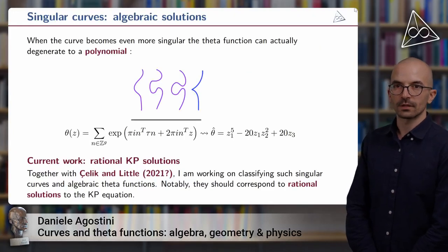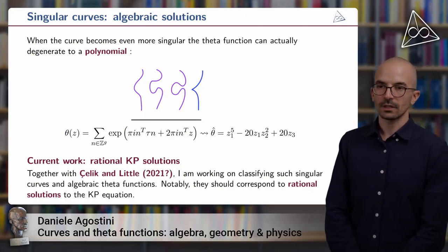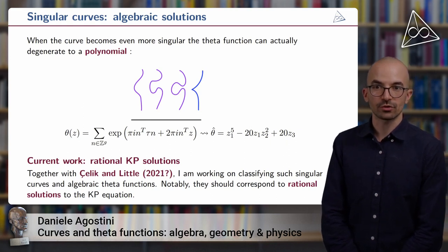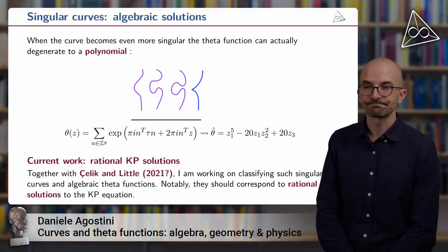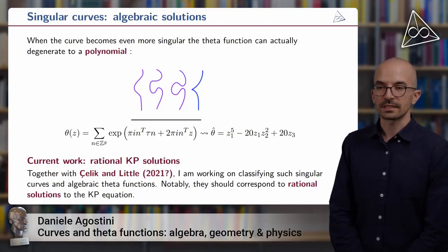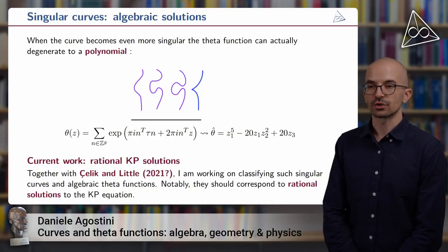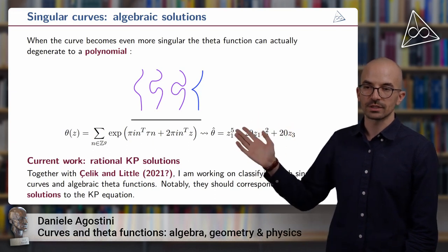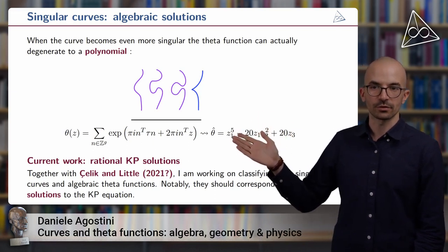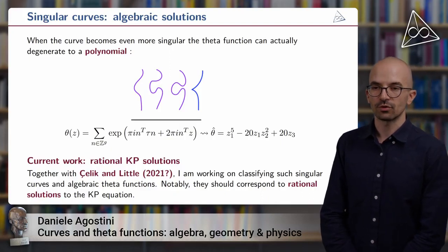So this was for future work and past work. I can tell you something about current work. So first we considered degeneration to rational nodal curves, but the curve can become even more singular. For example, in this case, we have a cartoon that shows the degeneration of a smooth elliptic curve of genus one to a curve which is now a rational cuspidal curve. So not a node anymore, but a cusp, so a slightly worse singularity.